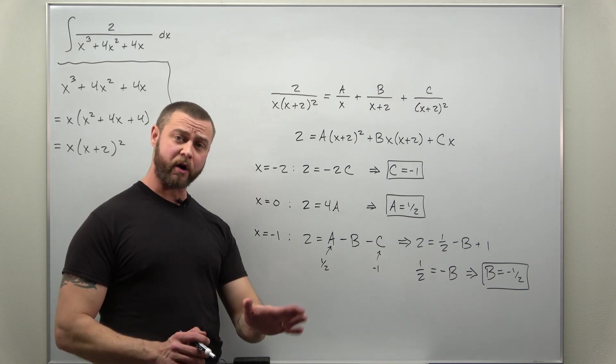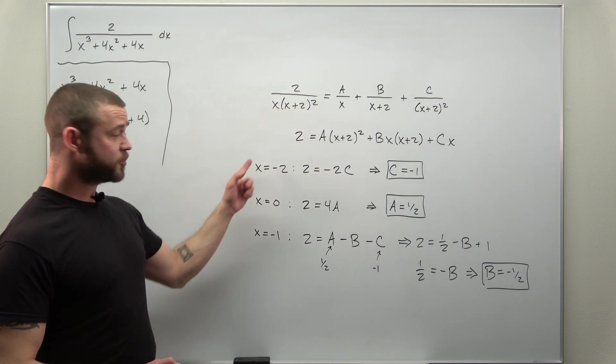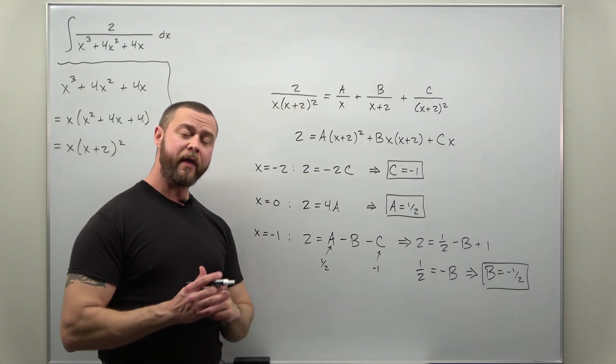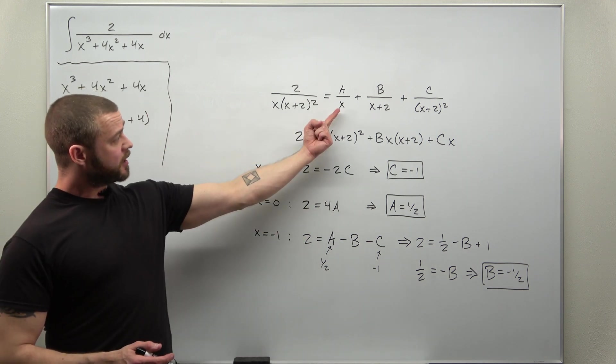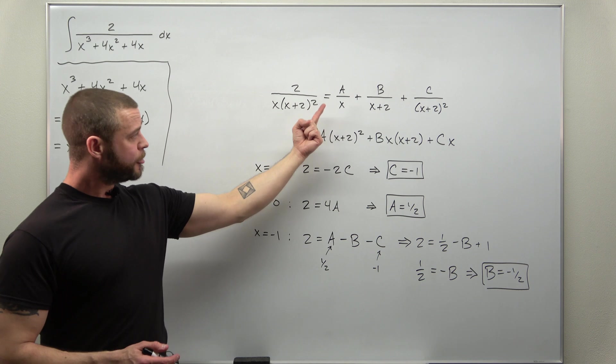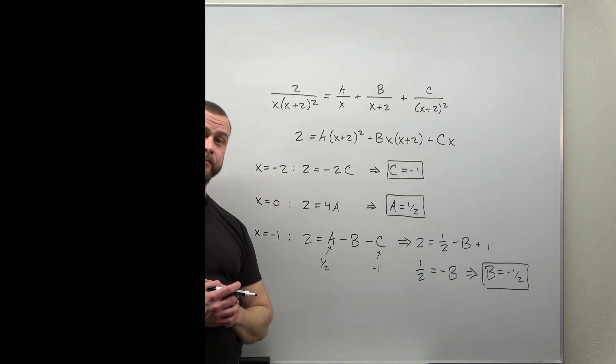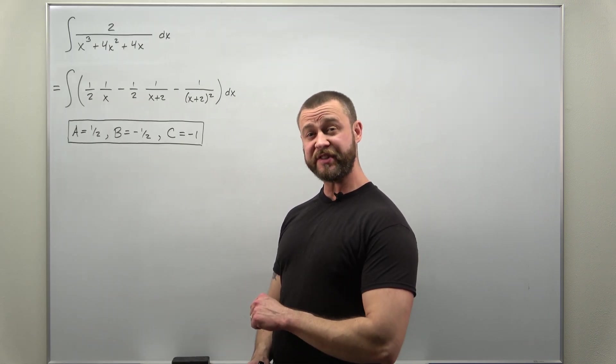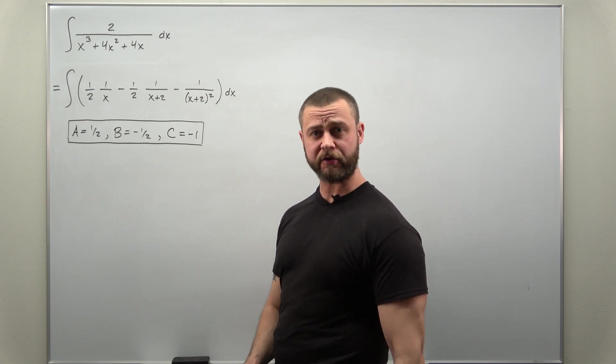Alright. That completes most of the work for a partial fraction decomposition question, going through all the algebra to solve for however many unknowns you have. Now, all that we need to do is integrate this. Plugging our values of a, b, and c back in, we should very easily be able to integrate those three partial fractions. With the values of a, b, and c determined, we plug them back in. And then we can evaluate the three integrals.